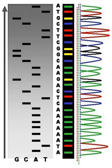Shotgun sequencing is a sequencing method designed for analysis of DNA sequences longer than 1,000 base pairs, up to and including entire chromosomes. This method requires the target DNA to be broken into random fragments. After sequencing individual fragments, the sequences can be reassembled on the basis of their overlapping regions.